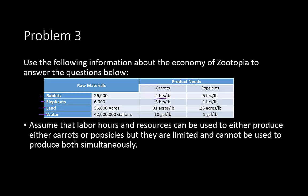For carrots: rabbit labor takes 2 hours per pound and we have 26,000 hours, giving 13,000 pounds of carrots. For popsicles using rabbit labor at 5 hours per pound, we get 5,200 pounds. For elephant labor: at 3 hours per pound on carrots, we get 2,000 pounds of carrots, and at 1 hour per pound on popsicles, we get 6,000 pounds of popsicles. Elephants are better at making popsicles, and rabbits are much better at making carrots.